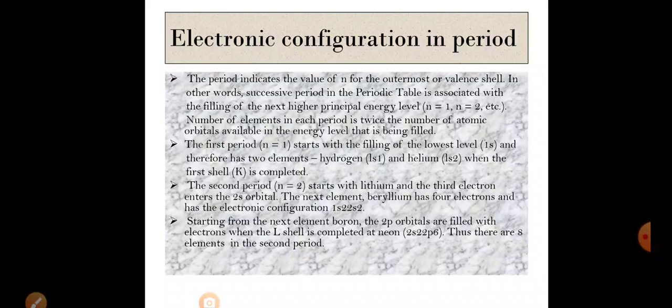The period indicates the value of n for the outermost or valence shell. For hydrogen, the valence shell is the 1s shell. In other words, successive periods in the periodic table are associated with the filling of the next higher principal energy level — n=1, n=2, n=3, and so on, filling 2s, 2p, 3s, 3p, 3d, 4s successively. The number of elements in each period is twice the number of atomic orbitals available in the energy level being filled.